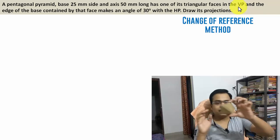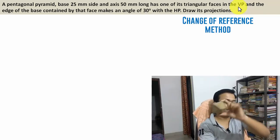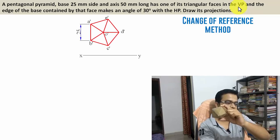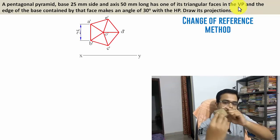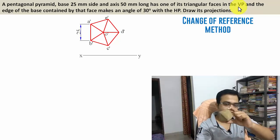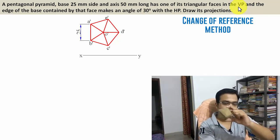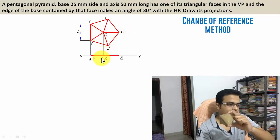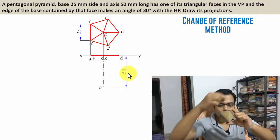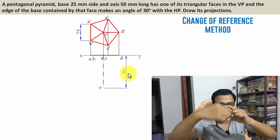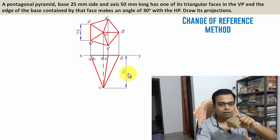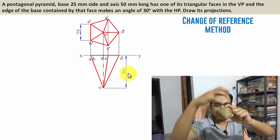Let's go ahead and make the front and top views. That's the front view — five corners in the base: A, B, C, D, E, and the apex represented by O, so O-dash in the front view. From the top, I'm going to be making the axis — the length is 50 mm — and from the top you're going to see three slant edges. That was the initial front view and the initial top view.